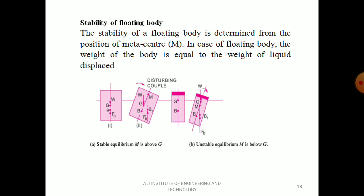Next, stability of a floating body. For stability of a floating body, the metacenter is important; for stability of a submerged body, the center of buoyancy is important. The stability of a floating body is determined from the position of metacenter M. In the case of a floating body, the weight of the body equals the weight of liquid displaced — this is Archimedes principle.